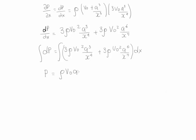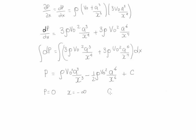Taking the integral on both sides, we get: P equals rho V₀ a³/x³ minus (1/2) rho V₀² a⁶/x⁶ plus a constant. We can combine the integration constants into a single constant C. To find C, we apply a boundary condition: the pressure equals zero when x equals negative infinity, far away from the sphere. Applying these values gives C equals zero.